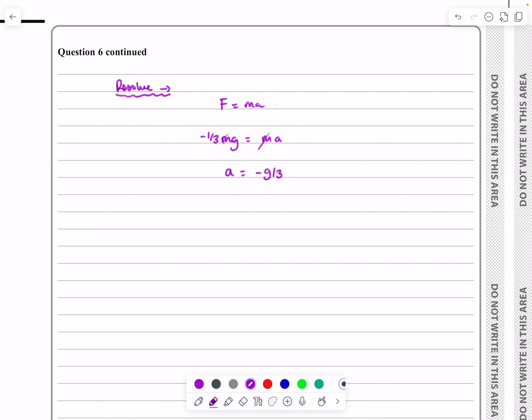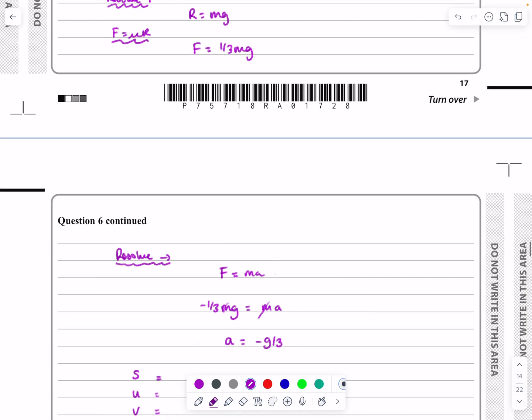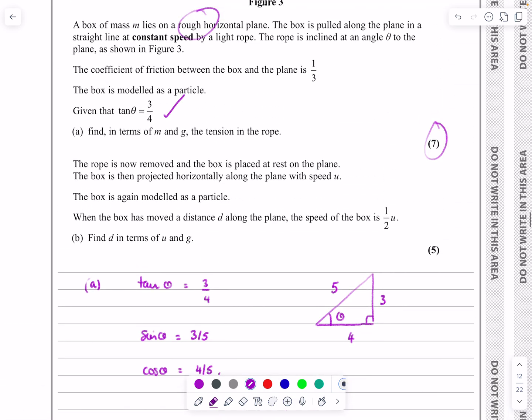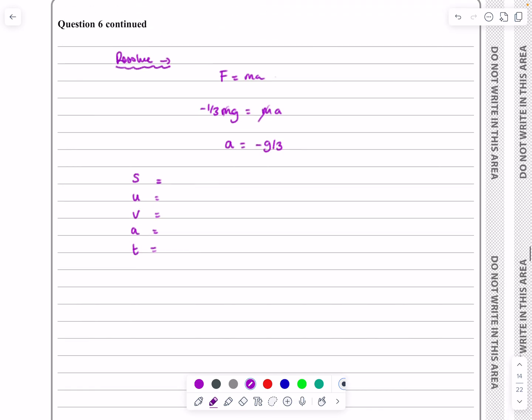That makes complete sense. We push it off with speed u, it's on a rough surface, so it'll be slowing down. We're not going to have it come to a complete halt. Let's work it out. We've got our suvats. They tell me it goes a distance d along the plane. At that point, v is going to be half u. We know it's set off with u. We've worked out the acceleration is minus g over 3. We've got everything in place.